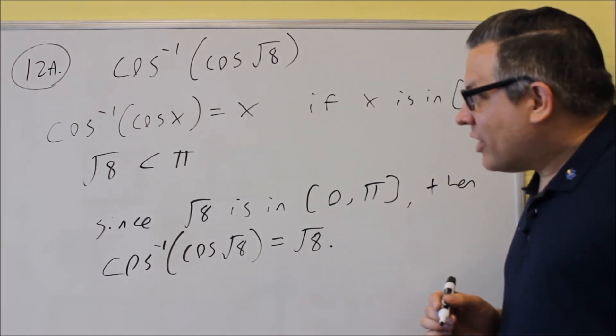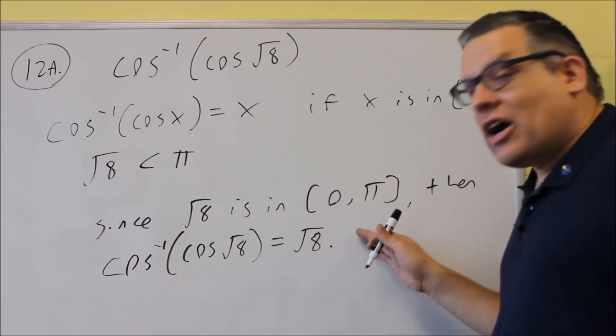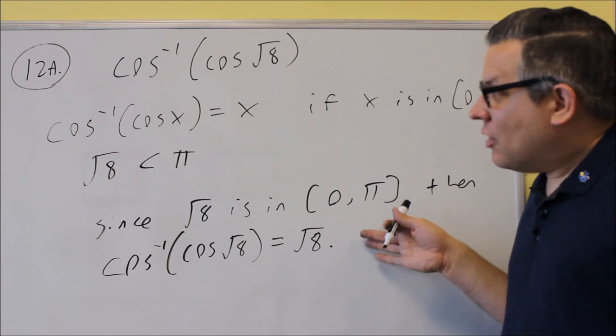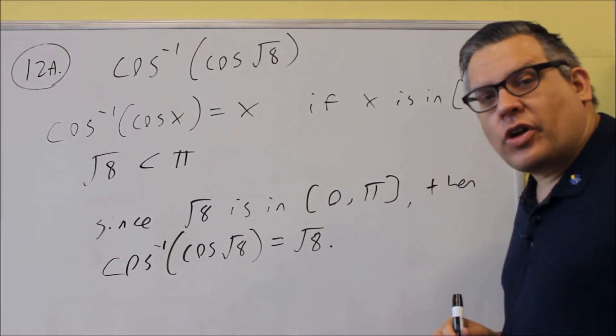Now, if it turned out that wasn't the case or it wasn't in the interval, then we can't say for sure that it cancels out. But on this one, it does work out, so the answer is square root of 8.